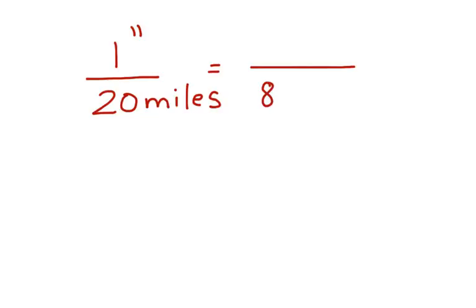You can do a similar process if you're using mileage. So let's say that on a map, 1 inch is equal to 20 miles. Let's say we wanted to figure out how many inches would be represented by 80 miles. Again notice that we have two ratios that are equal. They form a proportion.